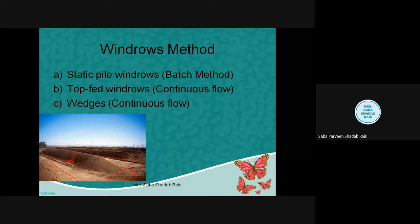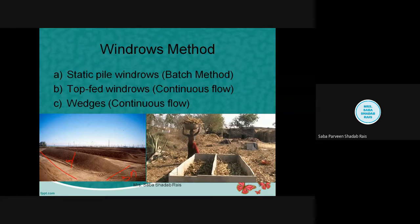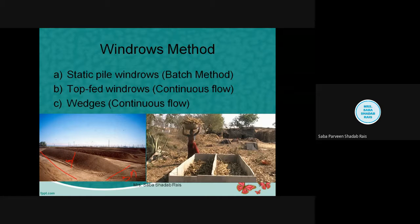The wedge or continuous flow method uses an initial stock of worms in bedding placed inside a coral-type structure — approximately three-sided, not more than three feet in height. The sides can be made of concrete, wood, or bales of hay or straw. In our college we do normal composting near the gymkhana, but not vermicomposting. The benefit of vermicomposting over normal composting is that the process is much faster.